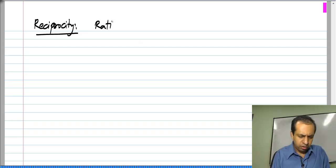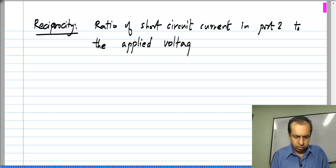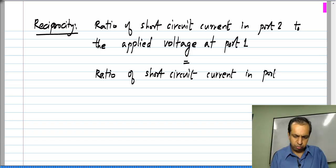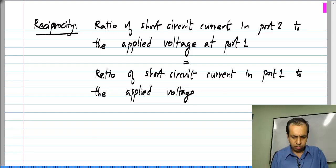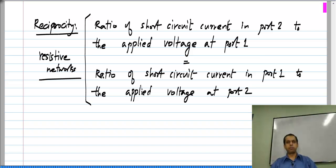Reciprocity means the ratio of short-circuit current in port 2 to the applied voltage at port 1 equals the ratio of short-circuit current in port 1 to the applied voltage at port 2. This is of course true for purely resistive networks. This is one particular statement of reciprocity in terms of short-circuit currents.